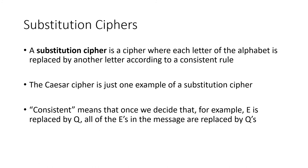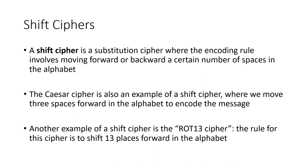A substitution cipher is a cipher where each letter of the alphabet is replaced by another letter according to a consistent rule — meaning the replacement is always the same for every occurrence of a given letter. The Caesar cipher is one example of a substitution cipher. A shift cipher is a substitution cipher where the encoding rule involves moving forward or backward a certain number of spaces in the alphabet. The Caesar cipher shifts three spaces forward. Another well-known example is the ROT13 cipher, which shifts 13 spaces forward.